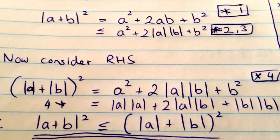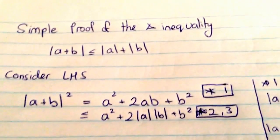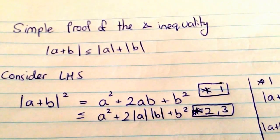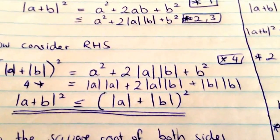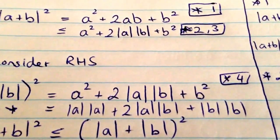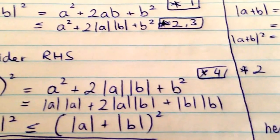So now, consider the right-hand side. On the right-hand side, we have mod a plus mod b. And we're going to consider the square of that. So when we expand that out, we're going to end up with a squared plus 2 mod a mod b plus b squared.